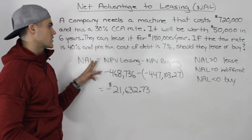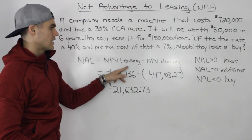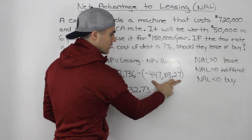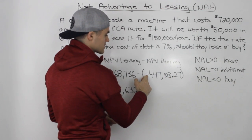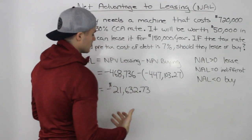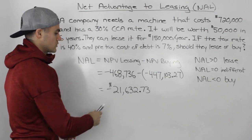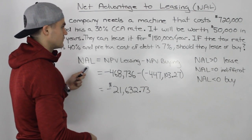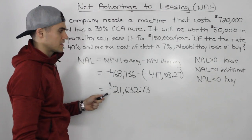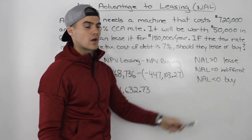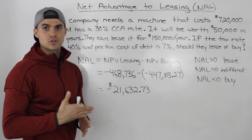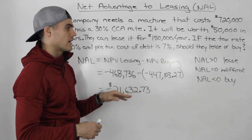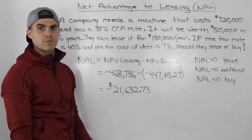Inputting everything for this question: NAL = NPV(leasing) − NPV(buying). Make sure to put the NPV of buying in brackets since it's negative, so the two negatives turn positive. When you net these numbers out, you get −$21,632.73. Since the net advantage to leasing is negative, we buy the machine — the same conclusion reached by comparing the two NPVs separately.